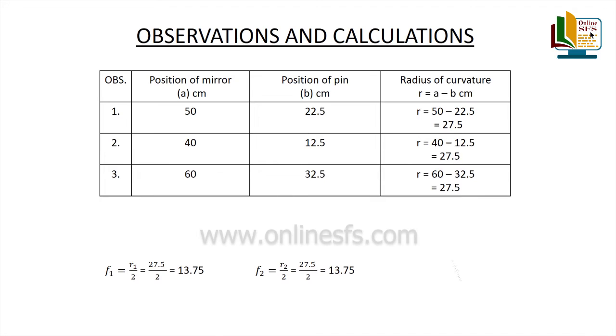Radius of curvature r3 equals a minus b equals to 60 minus 32.5 which gives us 27.5 cm. Focal length ke formula se f3 find out karenge which is equal to 13.75 cm.